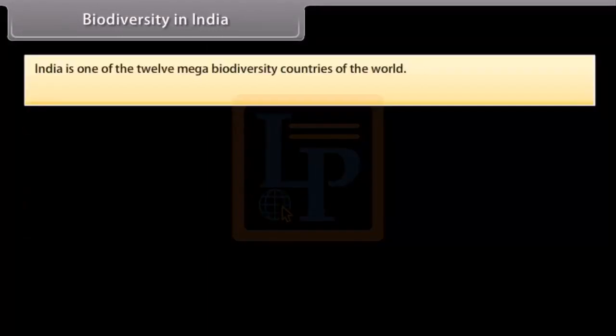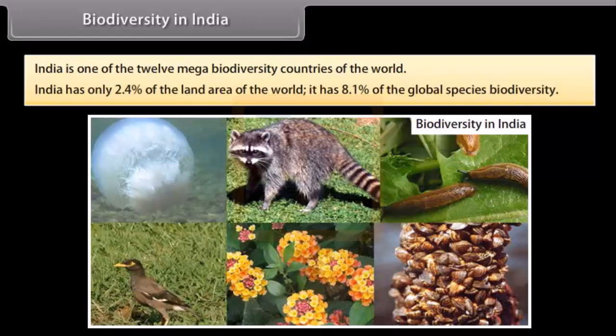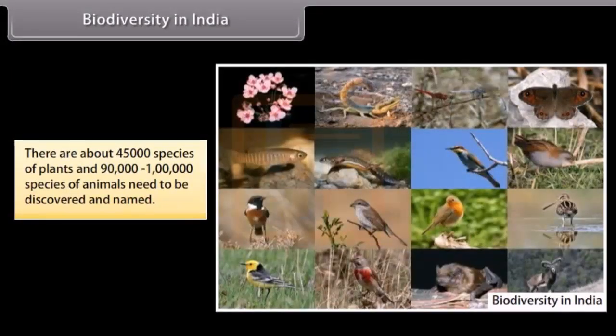Biodiversity in India. India is one of the 12 mega biodiversity countries of the world. India has only 2.4% of the land area of the world. It has 8.1% of the global species biodiversity. There are about 45,000 species of plants and 90,000 to 1,000,000 species of animals need to be discovered and named.